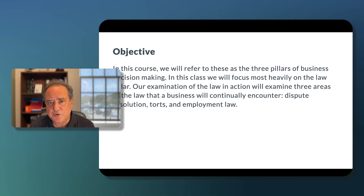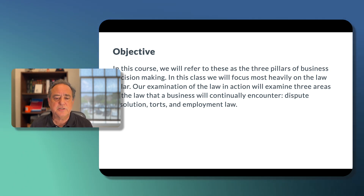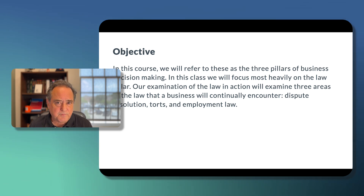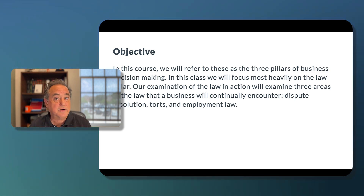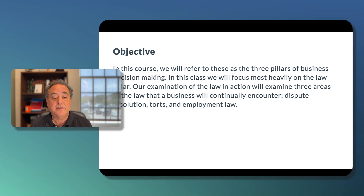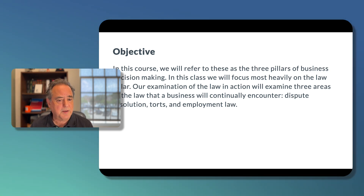We have a number of objectives in this course. We want to look at these three pillars of business decision-making. In this class, we're going to focus most heavily on the law pillar. Our examination of the law in action will cover three areas that a business will continually encounter: dispute resolution, torts — meaning negligence and product liability — and employment law.